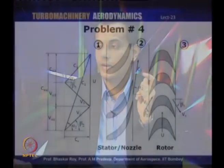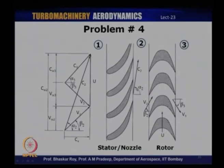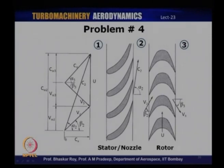The fourth question is different — it requires finding the number of stages for a multistage turbine. For an impulse turbine with a given pressure drop, how do you estimate the number of stages? The velocity triangle for an impulse turbine has V2 = V3 and β2 = β3. For constant axial velocity, C3 = V3 = V2.